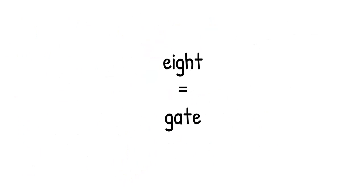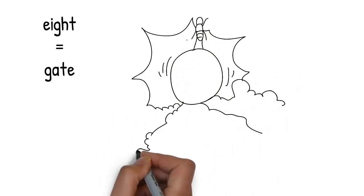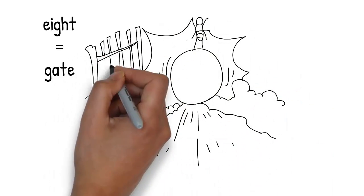The P rolls away, picking up speed, and crashes into a gate, forcing it open. Gate rhymes with 8.